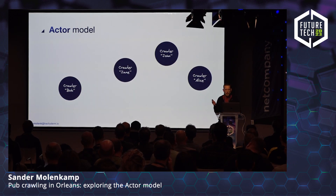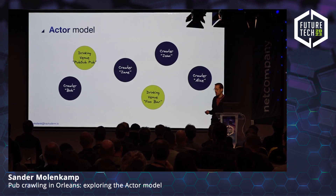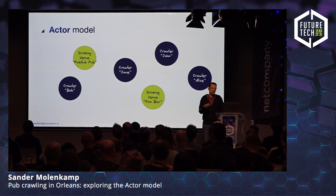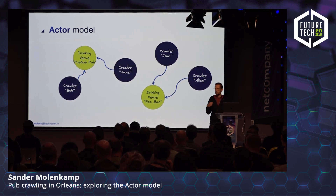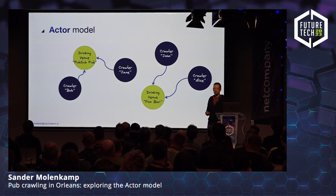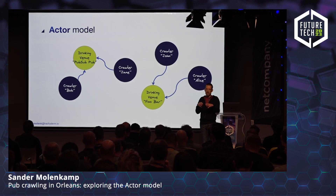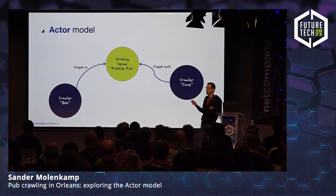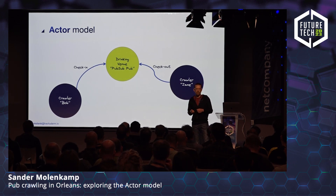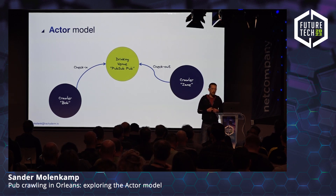The only way actors can communicate is through messaging. Let's add some more crawlers and another actor type — a drinking venue, representing a bar or restaurant. If you want crawlers to check into venues, you implement that by having them send messages to each other. A crawler like Jane could send a check-in message to the PubSub pub. But now we get into the concurrency story, because many messages can arrive at the same actor at the same time, and you'd typically need multi-threading synchronization like locks or semaphores.